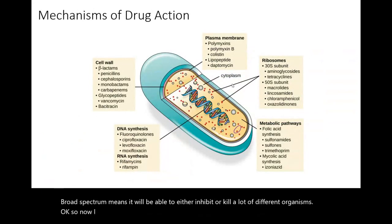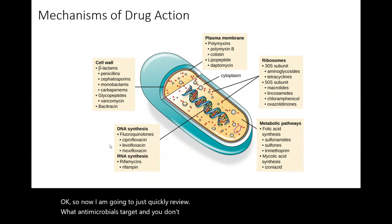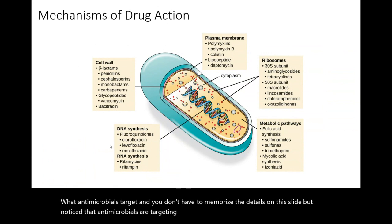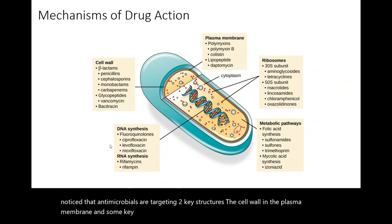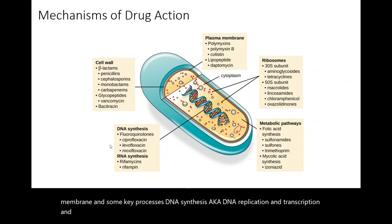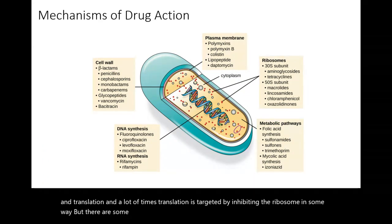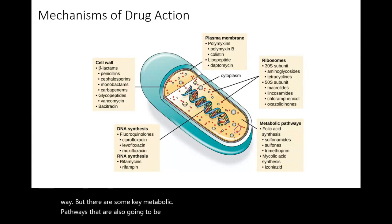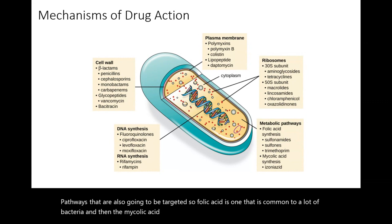Antimicrobials target two key structures — the cell wall and the plasma membrane — and some key processes: DNA synthesis (DNA replication), transcription, and translation. Translation is often targeted by inhibiting the ribosome. There are also key metabolic pathways targeted, such as folic acid, which is common to many bacteria, and the mycolic acid pathway, which is strictly for mycobacterium.